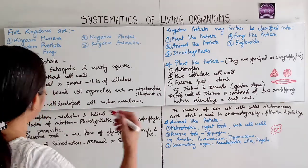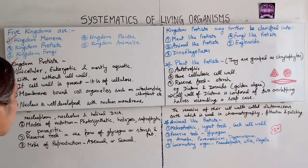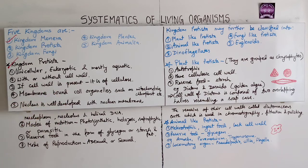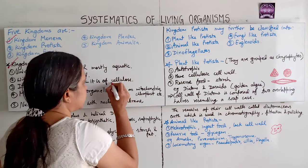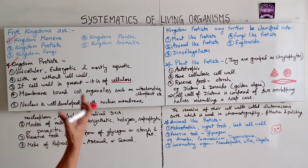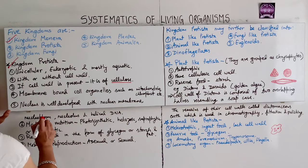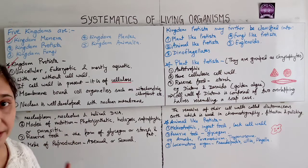After Kingdom Monera, the next is Kingdom Protista. These are unicellular, eukaryotic, and mostly aquatic. Cell wall, if present, is of cellulose. They have membrane-bound cell organelles such as mitochondria and chloroplasts. The nucleus is well-developed with nuclear membrane, nucleoplasm, nucleolus, and helical DNA.